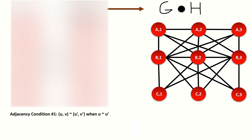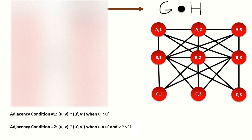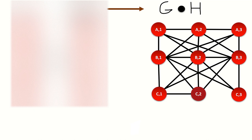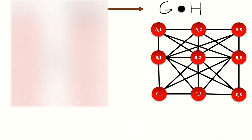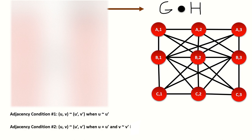Vertex c1: by the first adjacency condition, c1 connects to all vertices whose left entry is adjacent to vertex c in graph g, meaning all vertices whose left entry is b. By the second adjacency condition, c1 connects to all vertices with left entry c and right entry 2, as vertex 2 is adjacent to vertex 1 in graph h. Vertex c2: by the first adjacency condition, c2 connects to all vertices whose left entry is adjacent to vertex c in graph g, meaning those with left entry b. By the second adjacency condition, c2 connects to all vertices whose right entry is adjacent to vertex 2 in graph h. Last one, vertex c3: by the first adjacency condition, c3 connects to all vertices whose left entry is adjacent to vertex c in graph g, meaning those with left entry b. And by the second adjacency condition, c3 connects to all vertices with left entry c and right entry adjacent to vertex 3 in graph h.